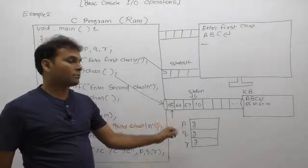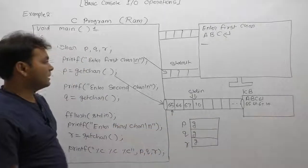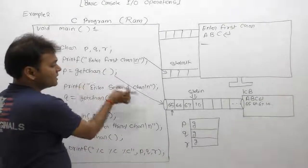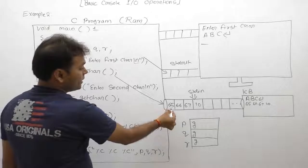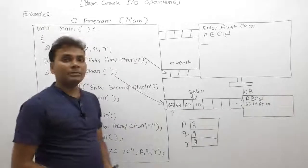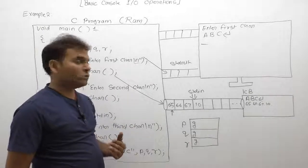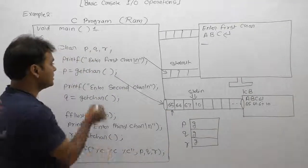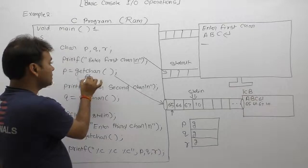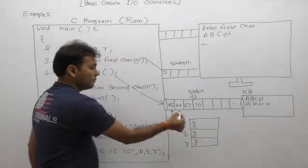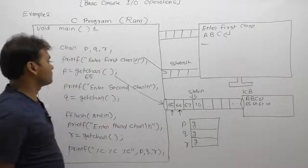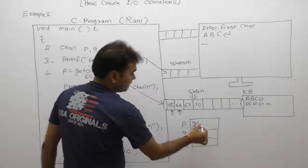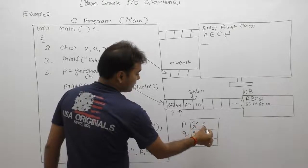Now the buffer contains data. Since data is found at the first byte, getchar immediately reads a single byte from the current position of the buffer pointer. The buffer pointer is at the first byte (65), so it reads 65 and then moves the cursor to the next byte.